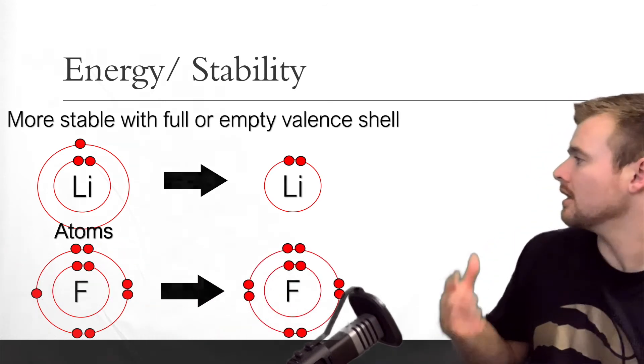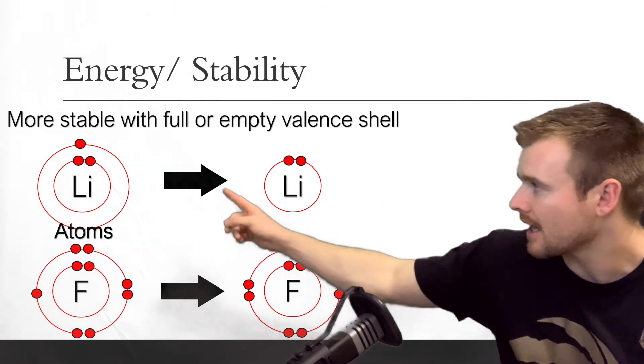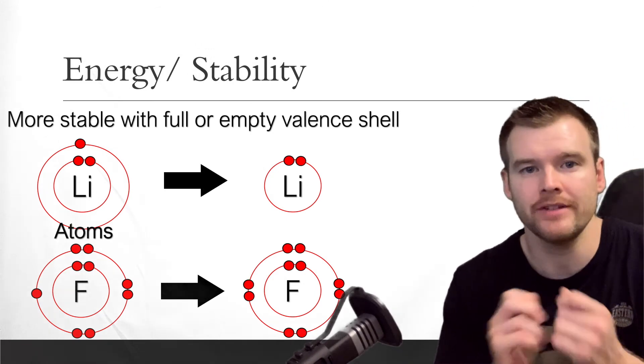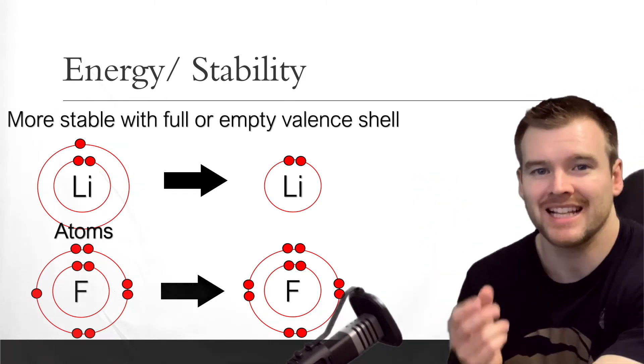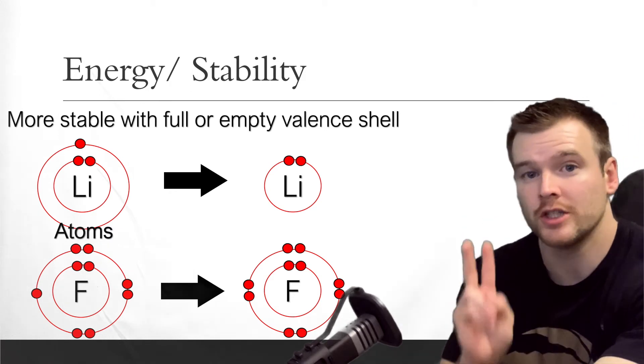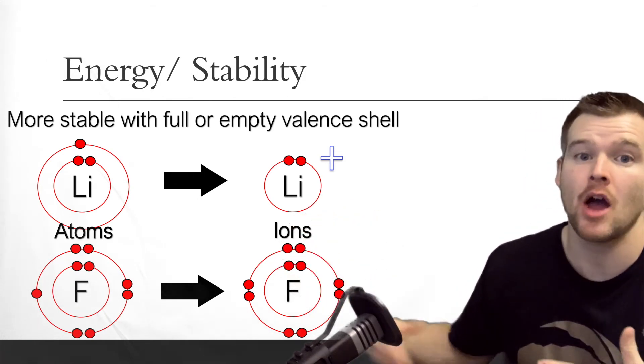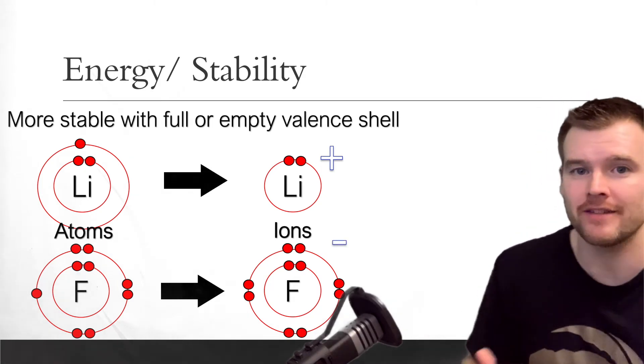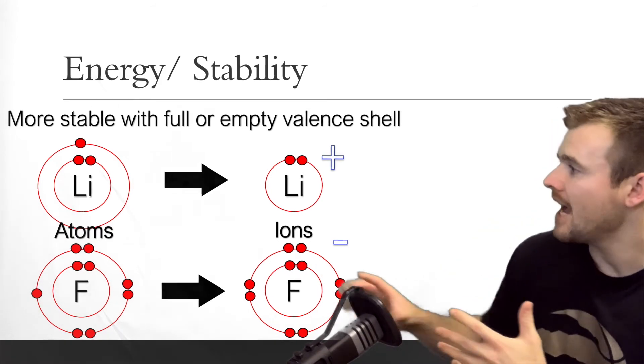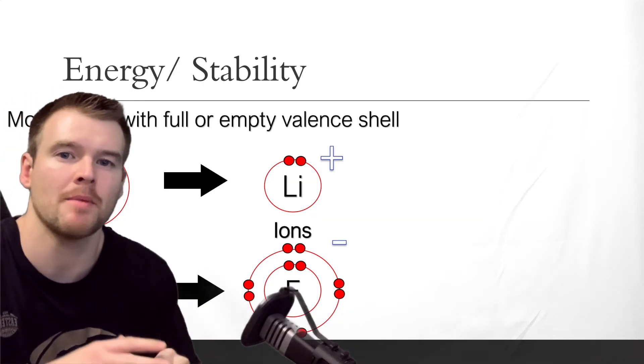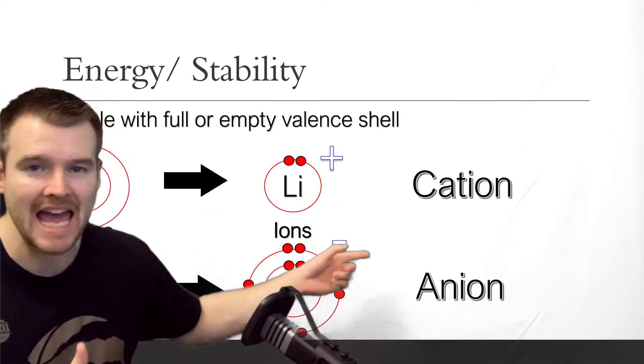What these are called is these are no longer called atoms, but they are called ions. Ions have given or taken electrons. And now they're in a more stable state with a charge because lithium got rid of an electron. Electrons are negative. It still has three protons, but now only two electrons. So it has a one plus. Fluorine had nine protons and nine electrons, but now it has gained another electron. So now it's going to have a negative charge because it has one extra electron. So these are examples of ions with their full or empty valence shell, and these are the atoms where they are neutral. Another word that you might see come up for a positive ion would be a cation, and a word for a negative ion would be an anion.